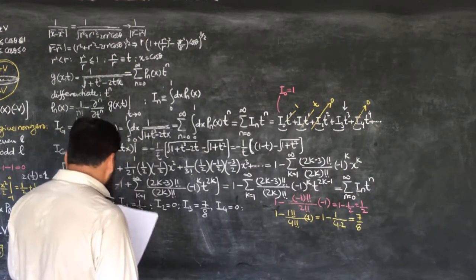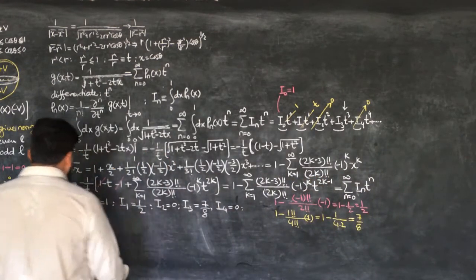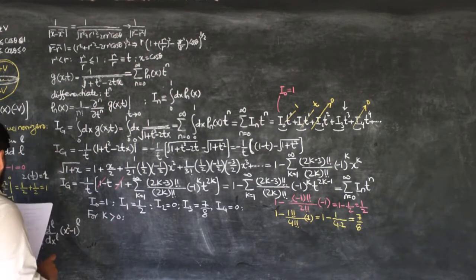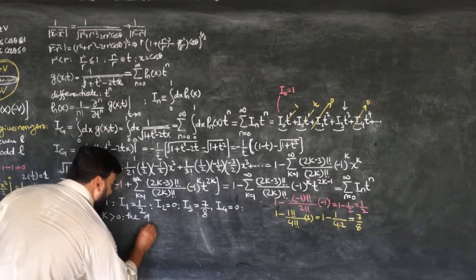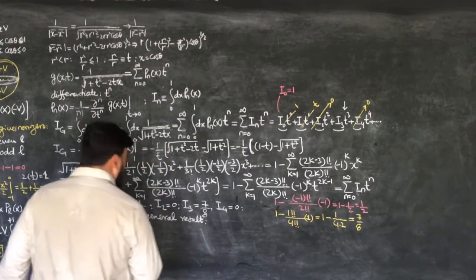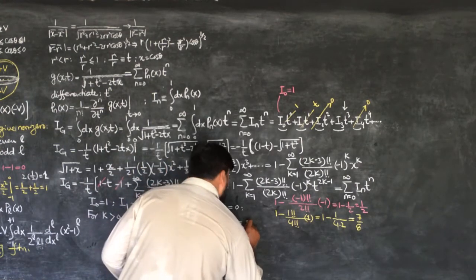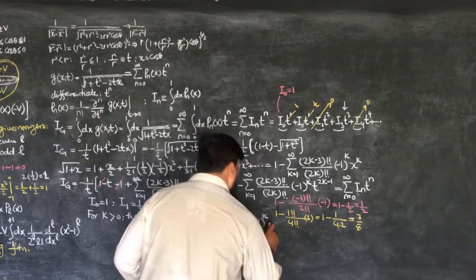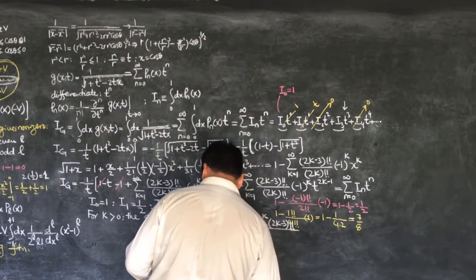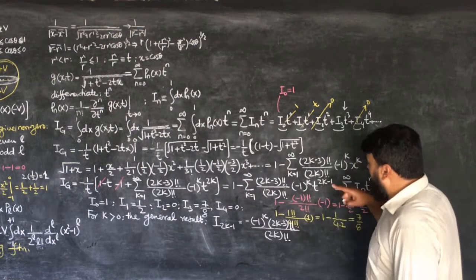For k greater than 0, meaning k positive, the general result will be: i_{2k-1} is equal to minus (minus 1)^k times (2k minus 3) double factorial divided by (2k) double factorial.